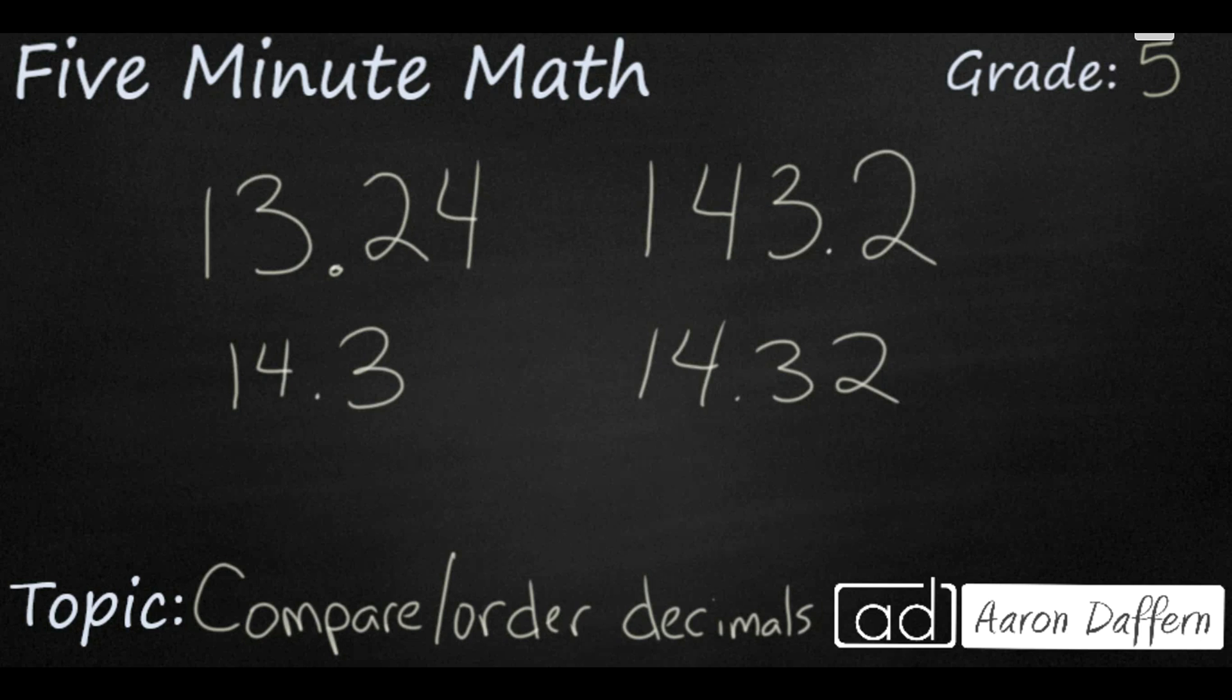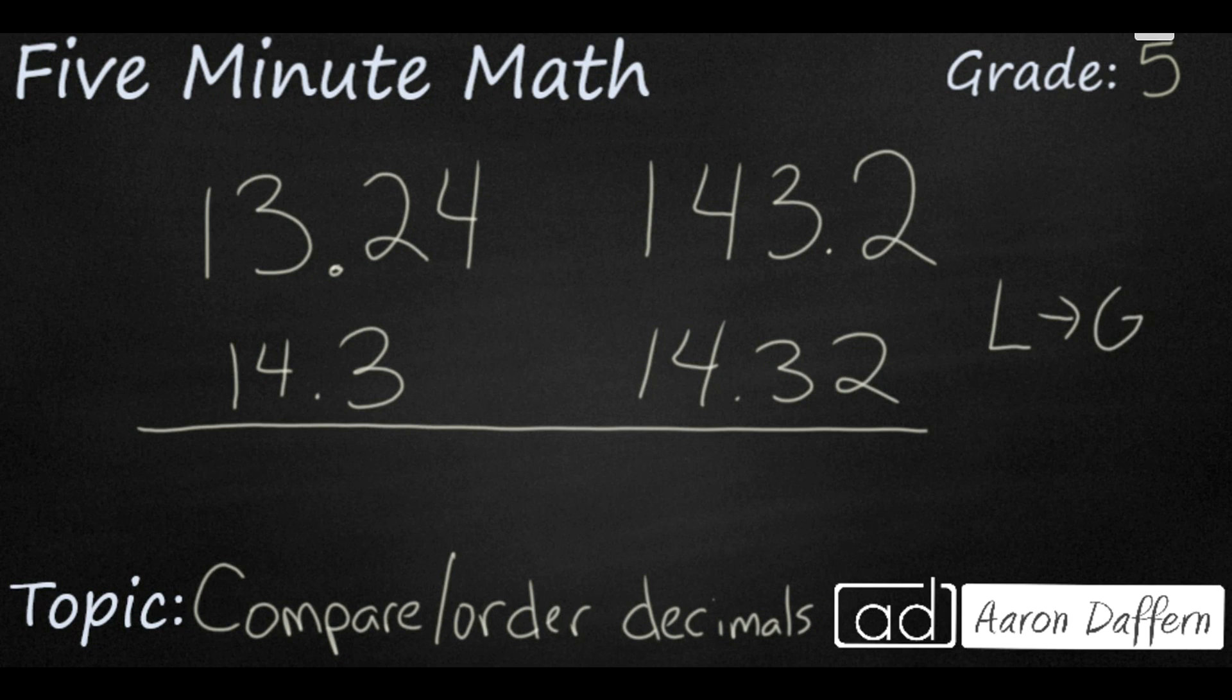Now take a look at these four numbers here. Let's say you wanted to put them in order from least to greatest. So you're looking for the smallest number here. And you see this number here, this is going to be our largest number because it goes all the way to the hundreds place. We're going to go ahead and put that over on the end because we know that's going to be our greatest number since it has a 1 in the hundreds place.